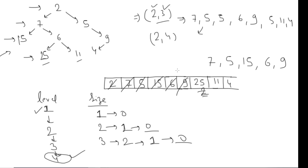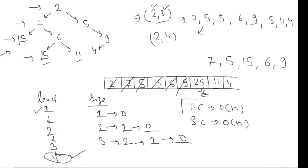Now let's talk about complexity. As you can see, we do operations one by one for each element — first level, second level, third level, fourth level — so overall we take time complexity of O(n) because we iterate on each element. For space complexity, we use a queue which can store at most n elements, so space complexity is also O(n).